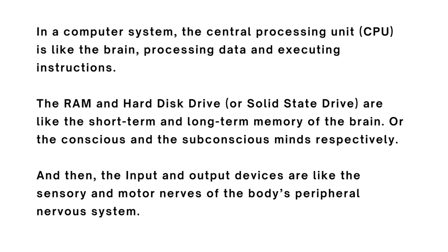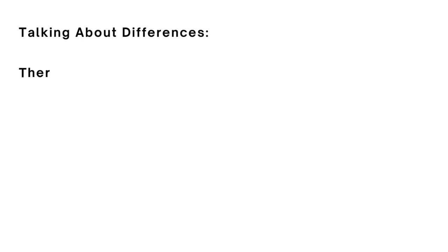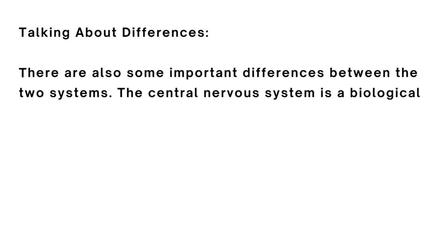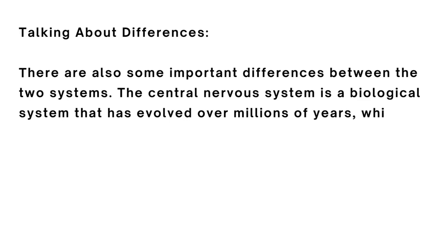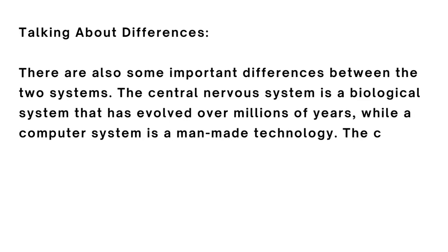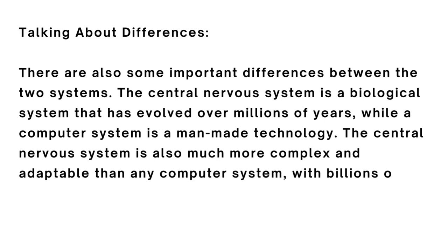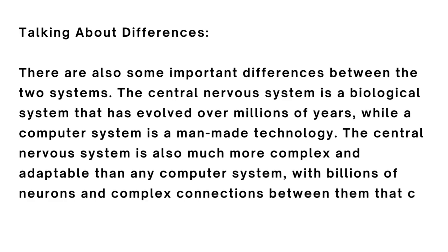The hard disk or SSD — the permanent memory of the computer — can be likened to the subconscious mind, since information deposited in the subconscious stays longer than in the conscious mind. The input and output devices are like the sensory and motor nerves of the body's peripheral nervous system. Despite the similarities, the central nervous system is a biological system that has evolved over millions of years, while a computer is man-made technology — and the CNS is far more complex and adaptable, with billions of neurons and complex connections that can change over time.